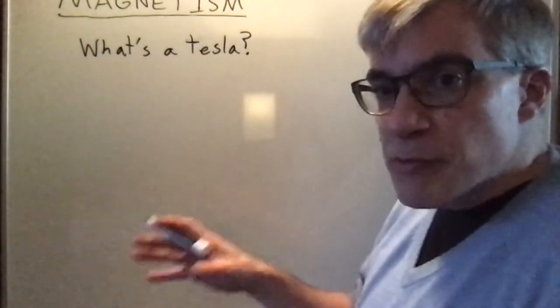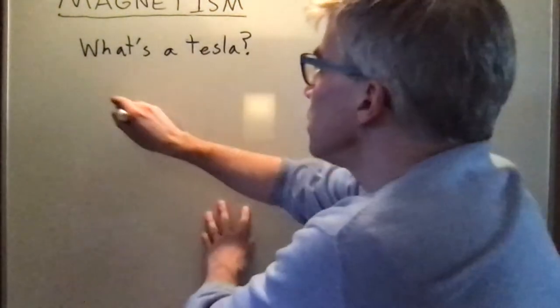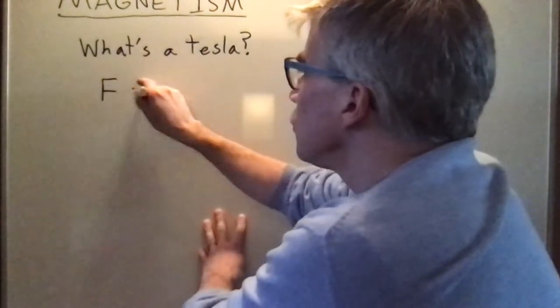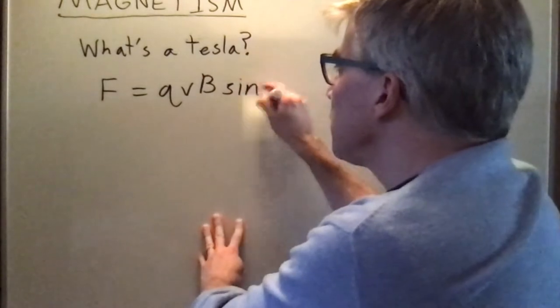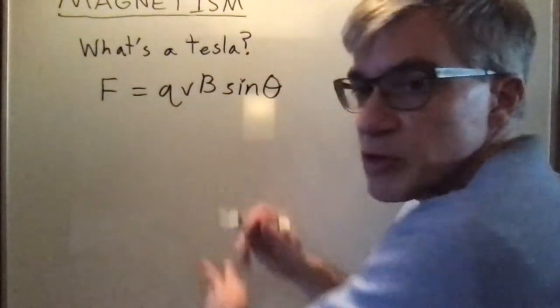Let's take a formula where we know everything but the magnetic field in terms of its units. Force equals QVB sine theta. That's the force on a moving point charge.